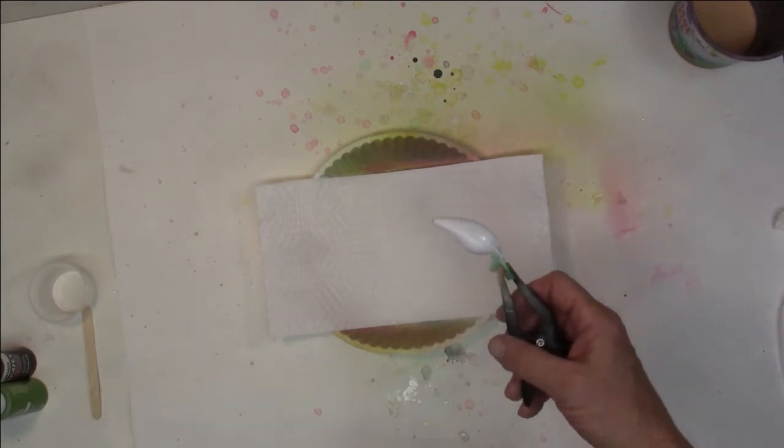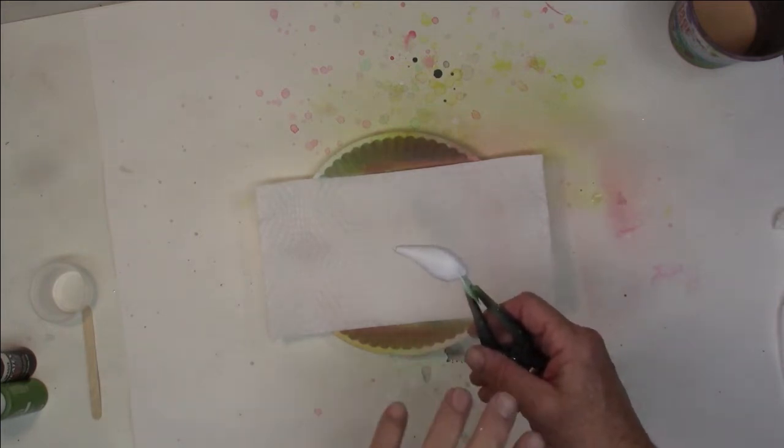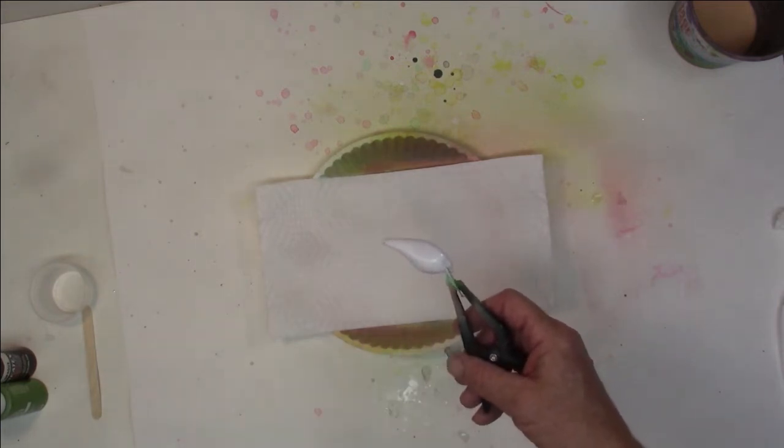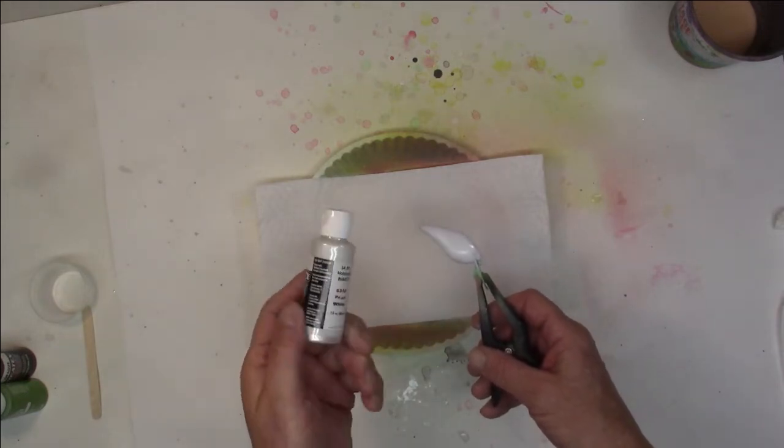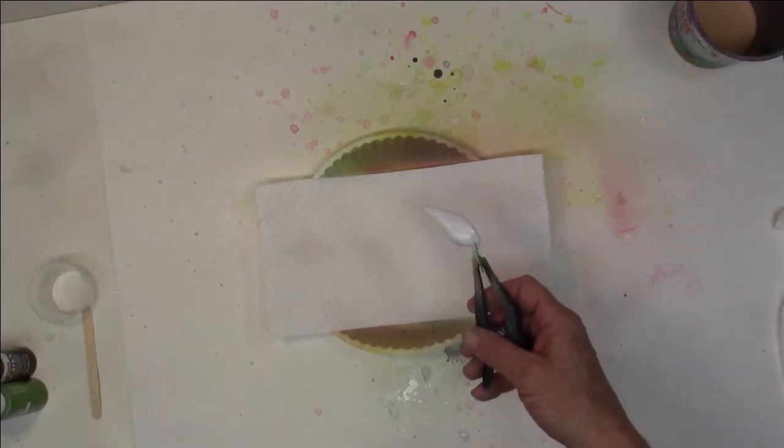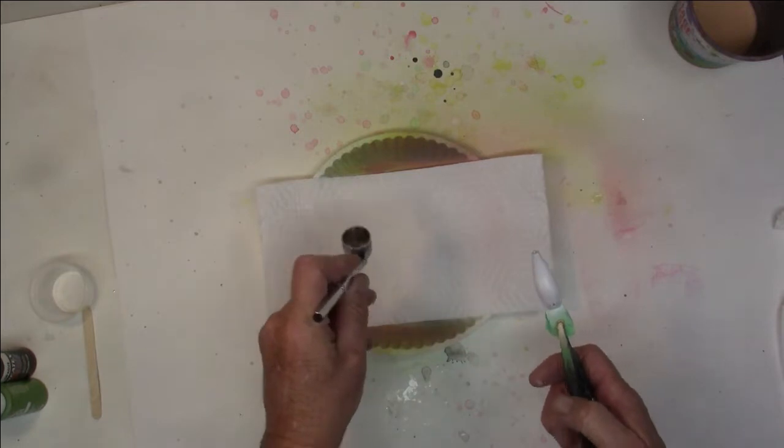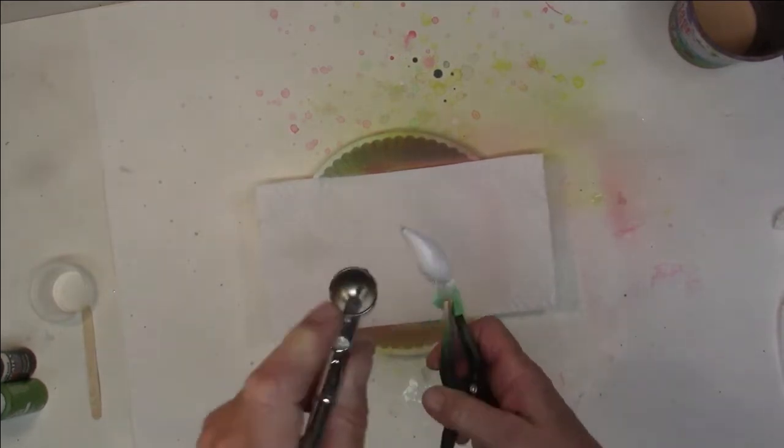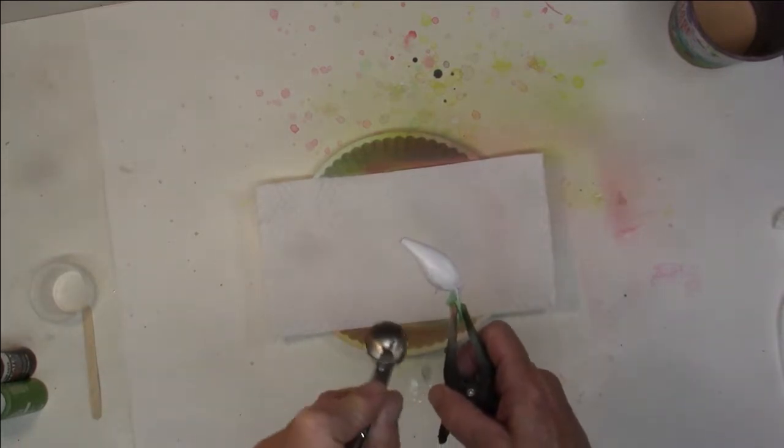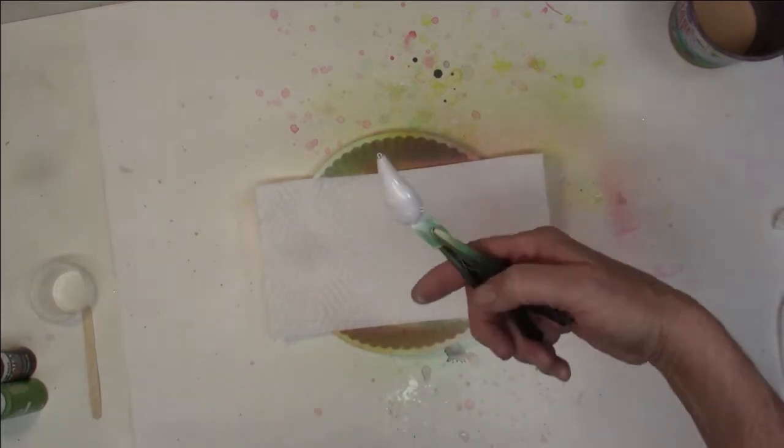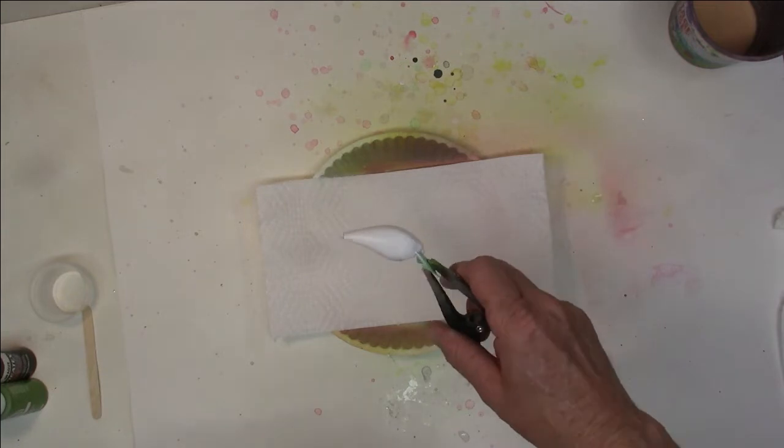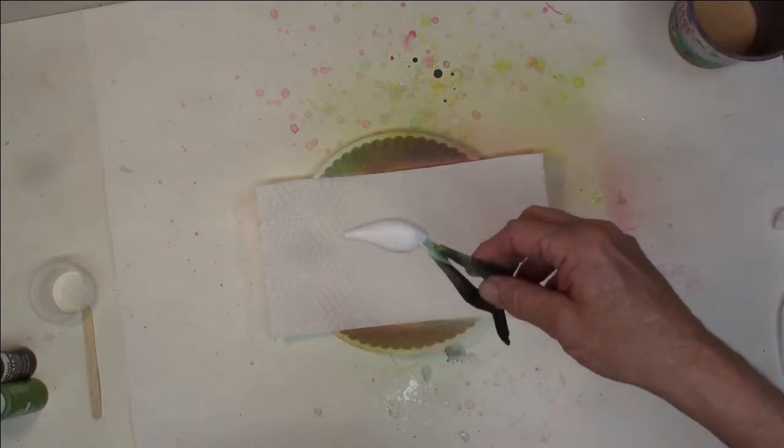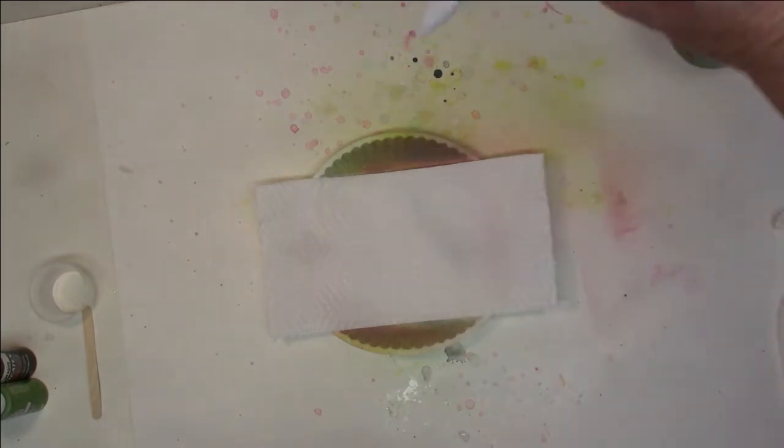Alright, our next step. Now, this is one you wouldn't necessarily have to do. You could just leave it with the opaque white, but I'm going to come back with some Createx Pearlized White and put that in the belly. I like the pearlized colors and the sheen you get from them. I'm sure that doesn't show up much in the cameras, but I really like the looks of it. So I took the extra step with the pearlized. You wouldn't have to do that if you don't want to.